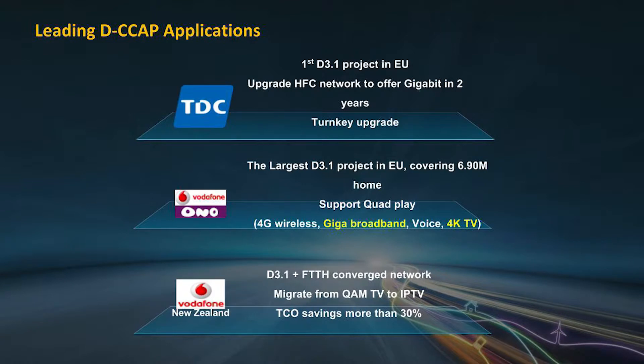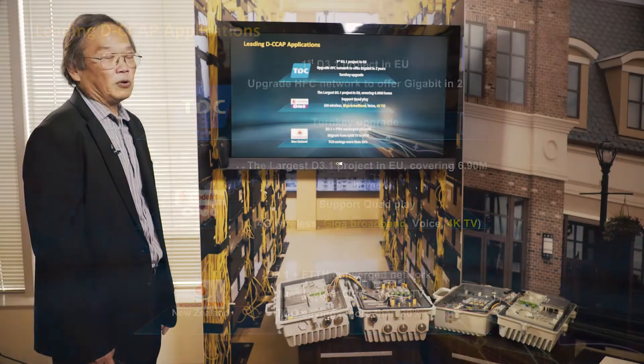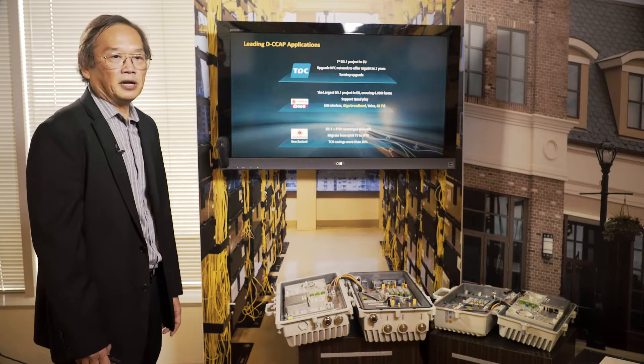Here are three prime examples. TDC in Denmark is our lead customer for 3.1 deployment. With TDC, they use the Huawei solution end-to-end to upgrade the entire HFC network. It has been deployed successfully for the last two years and offers gigabit solutions for TDC's customers. That was the first DOCSIS 3.1 project in the EU.